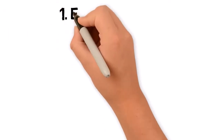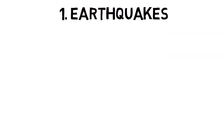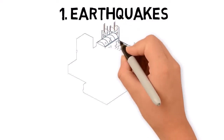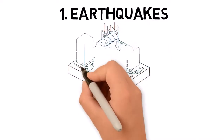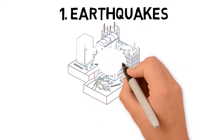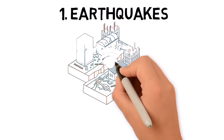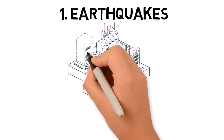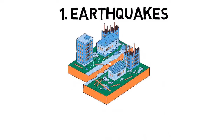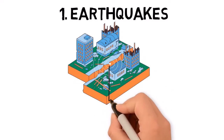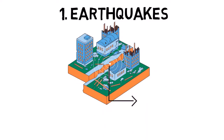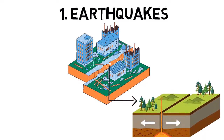Earthquakes occur when there is a sudden release of energy in the Earth's crust, causing the ground to shake. This release of energy is usually due to the movement of tectonic plates, which can either collide, slide past each other, or move apart.